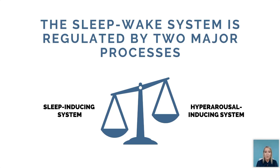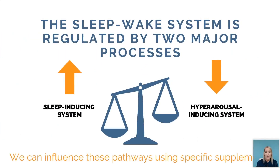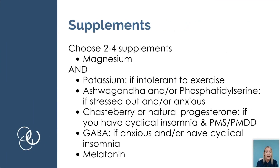Remember how we talked about the sleep-wake system regulated by two major processes: the sleep-inducing system and the hyper-arousal-inducing system. We want to work on these to improve the sleep system and lower the arousal or alert system. We can influence these by using different supplements. I recommend you choose between two to four supplements so you're not completely overloaded. Magnesium is the bare minimum — if you only want to try one supplement, it should be magnesium.